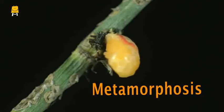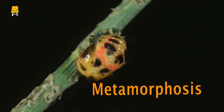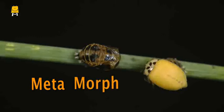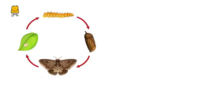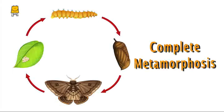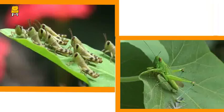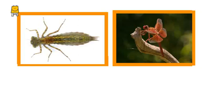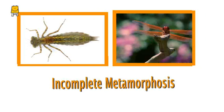This change that takes place in the life cycle of insects is called metamorphosis. 'Meta' means change and 'morph' means form, hence metamorphosis means change in form. In the four-stage life cycle, the young one — the caterpillar — and the adult are completely different in appearance and eating habits, making it a complete transformation called complete metamorphosis. In the three-stage life cycle, the young one — the nymph — looks similar to the adult, so it is called incomplete metamorphosis.